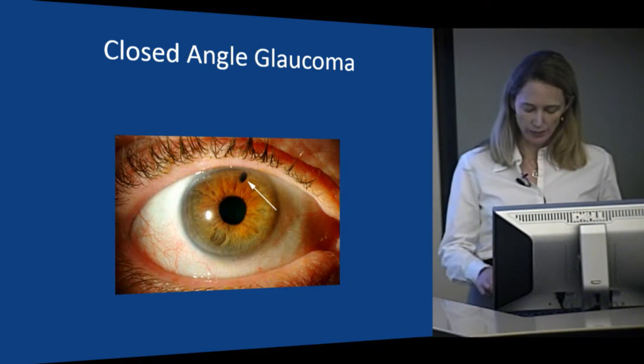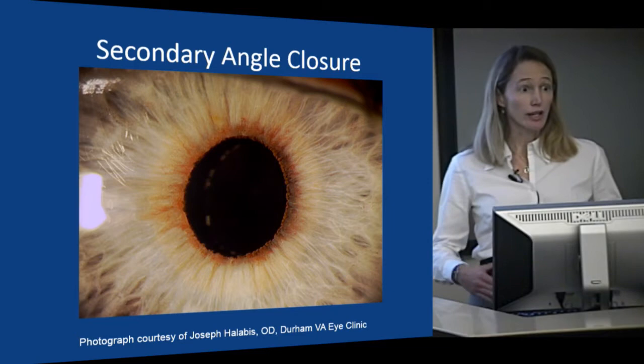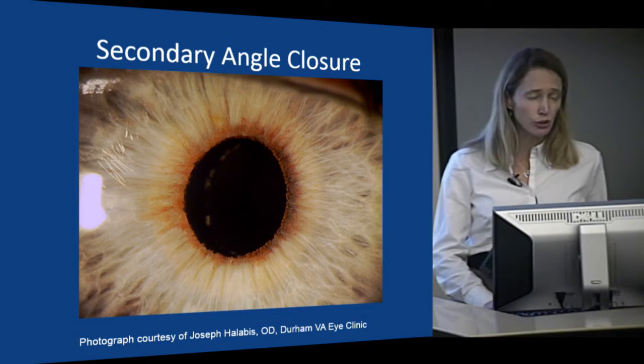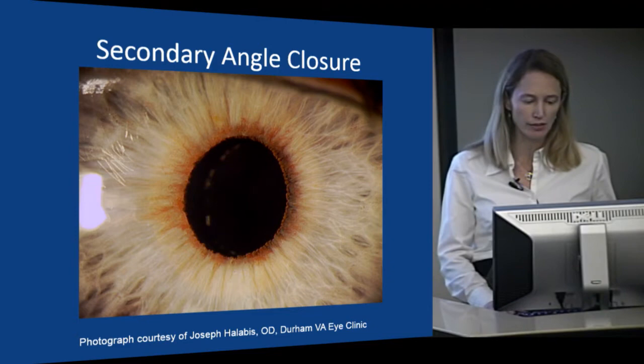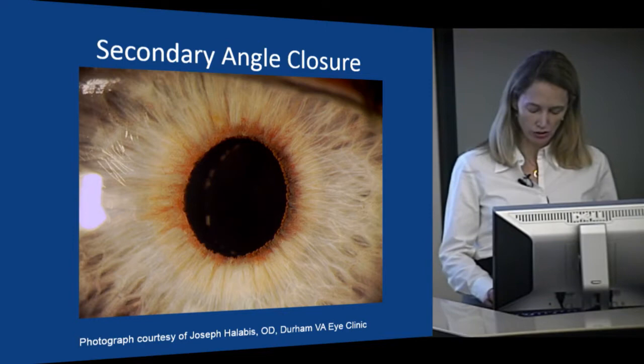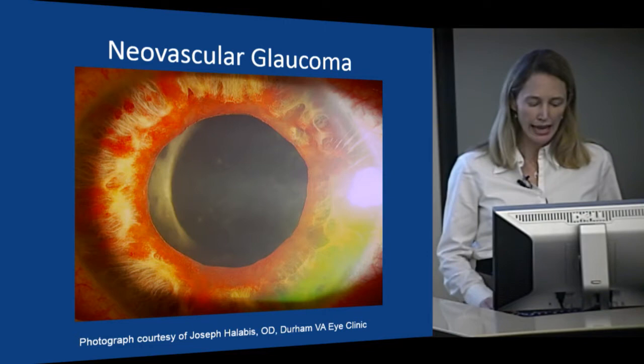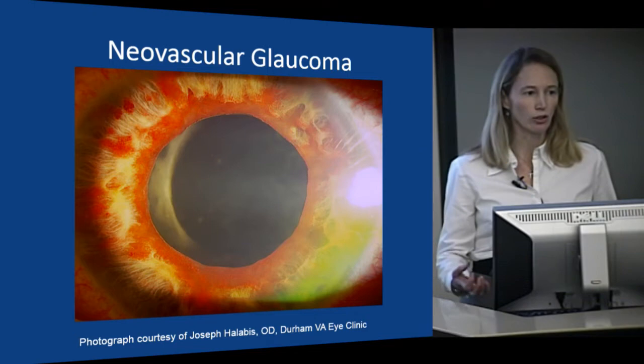That is primary closed angle glaucoma. There are also secondary forms of closed angle glaucoma. Those of you who take care of patients with diabetes are probably familiar with rubeosis of the iris or neovascularization of the iris. This usually starts right at the pupillary margin and can be quite subtle, but it can advance to florid rubeosis that takes over the whole iris. Even before it gets to that point, these abnormal blood vessels can creep into the angle and form a membrane over the angle, resulting in a secondary closed angle form of glaucoma.